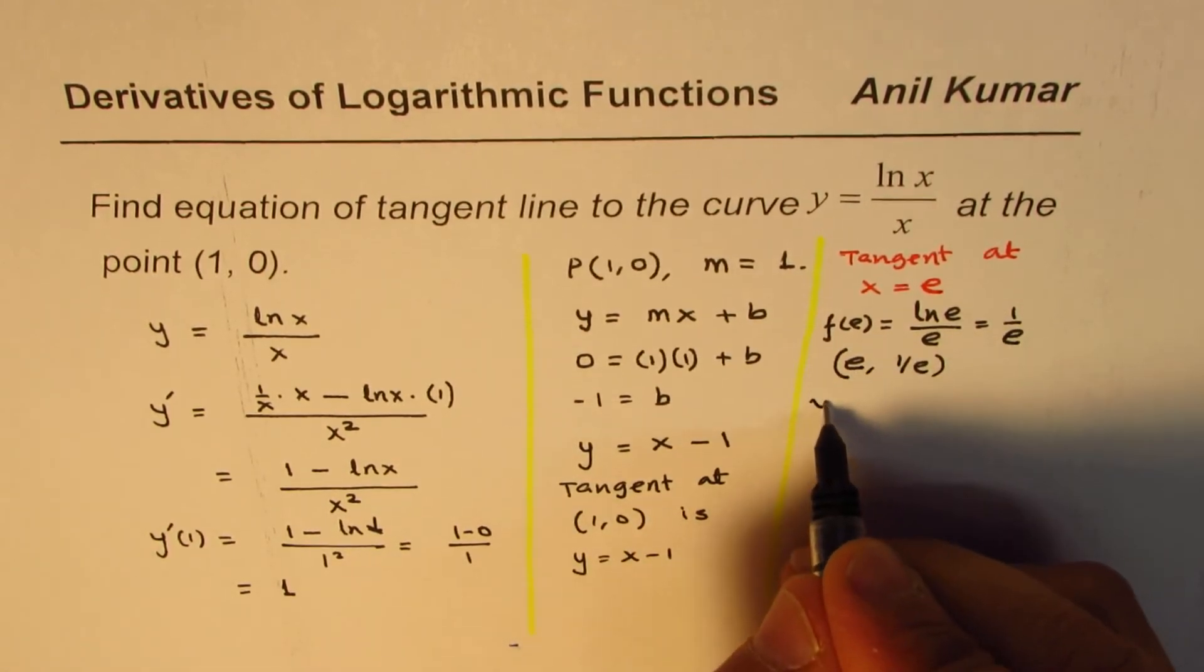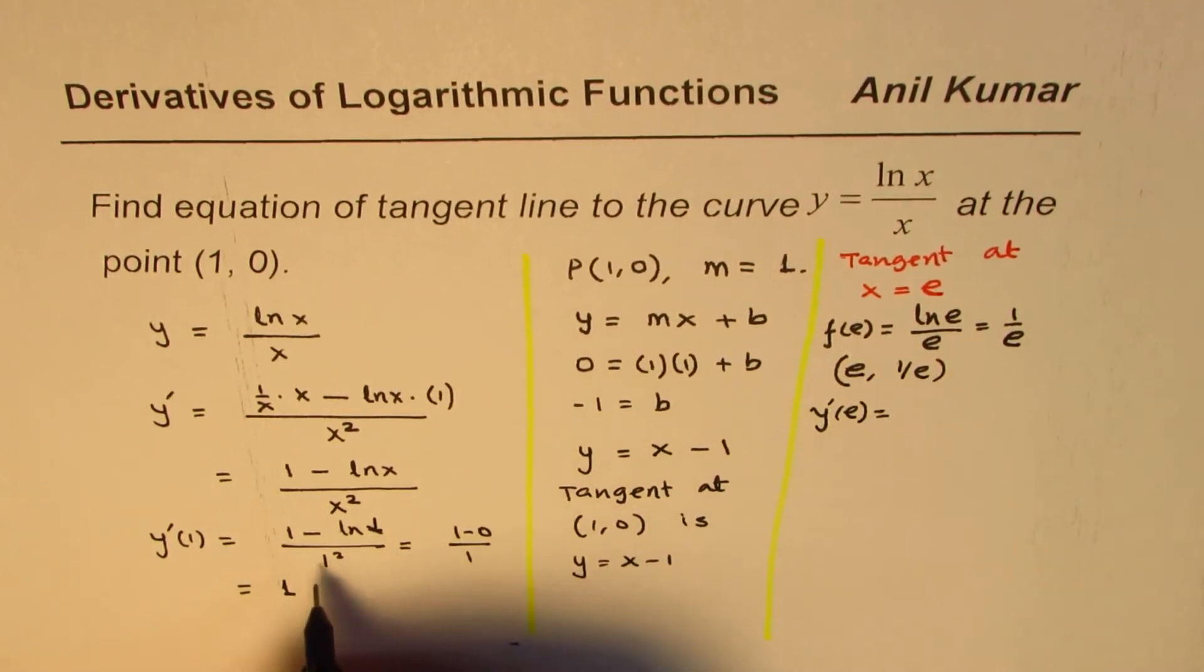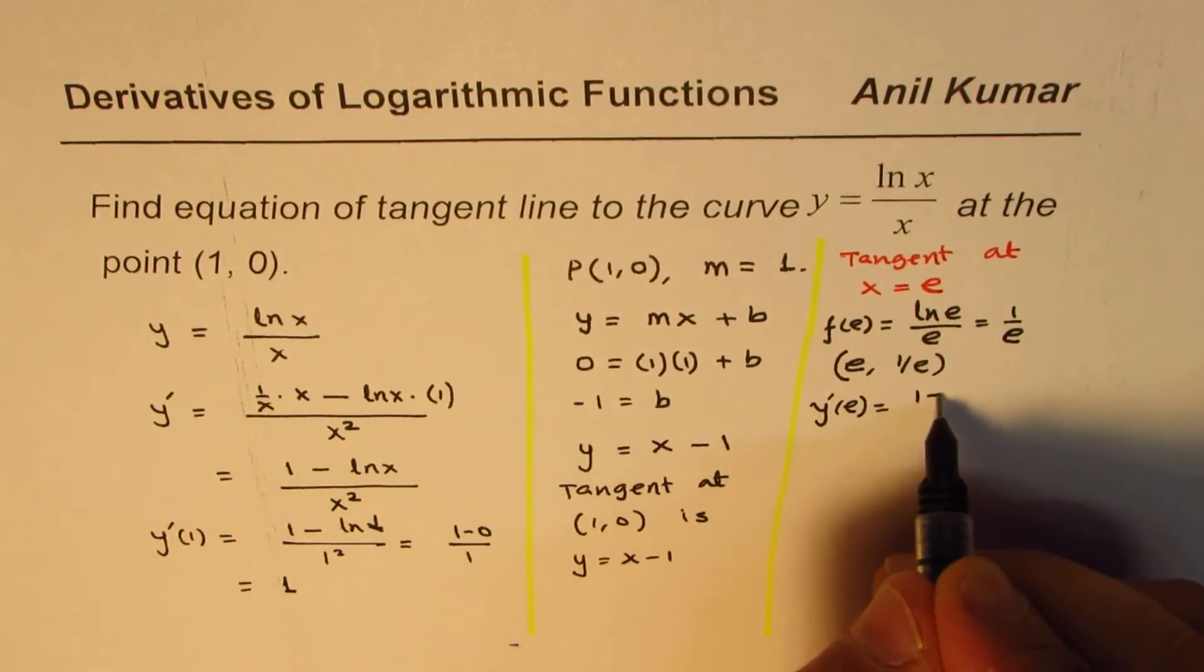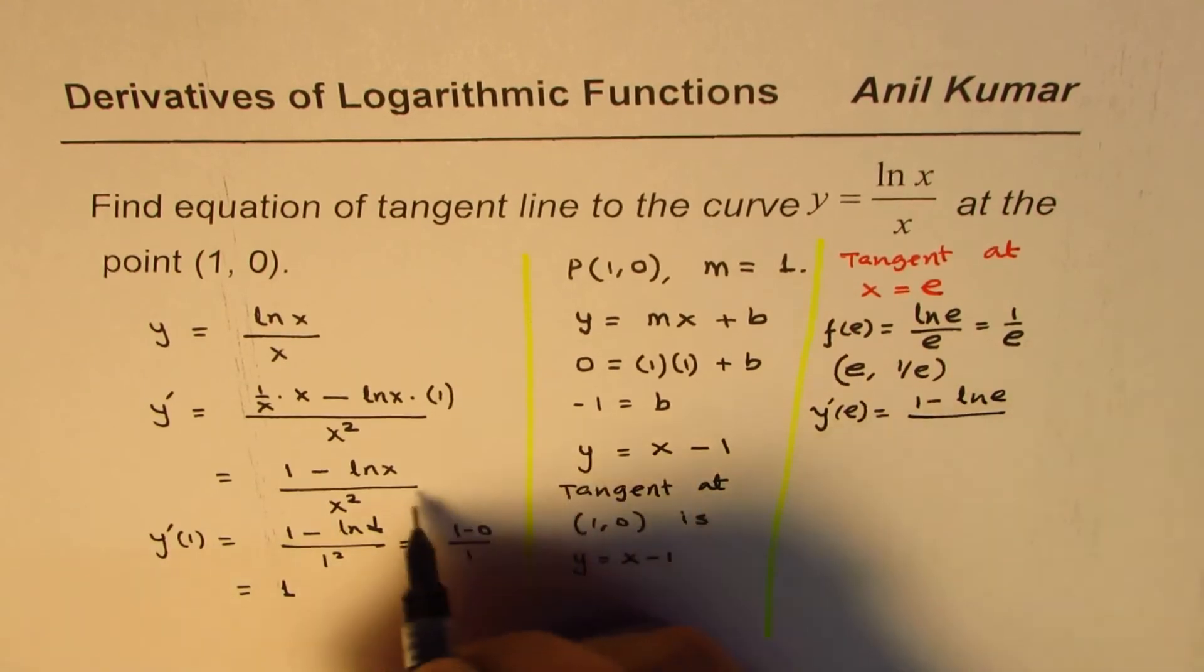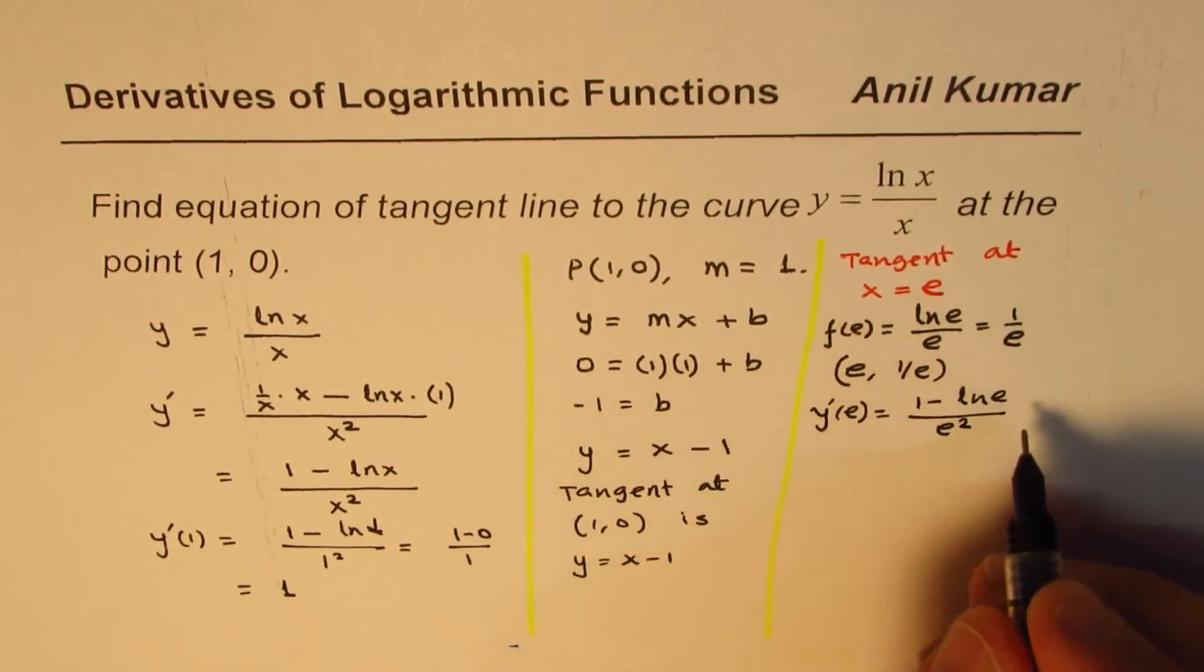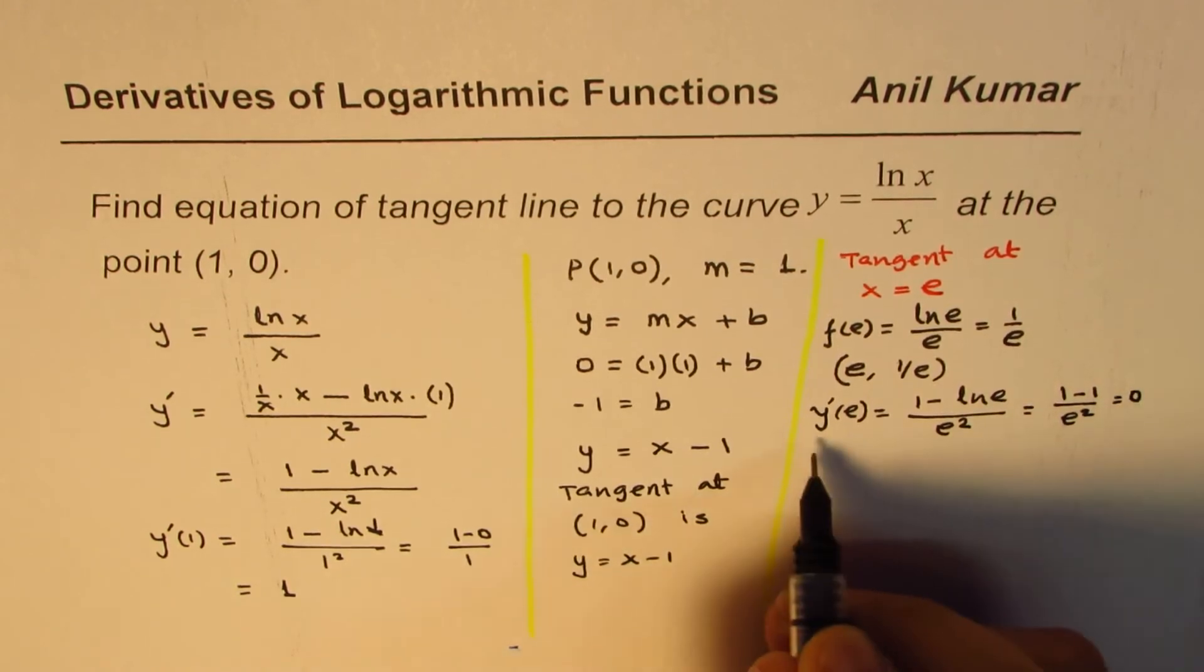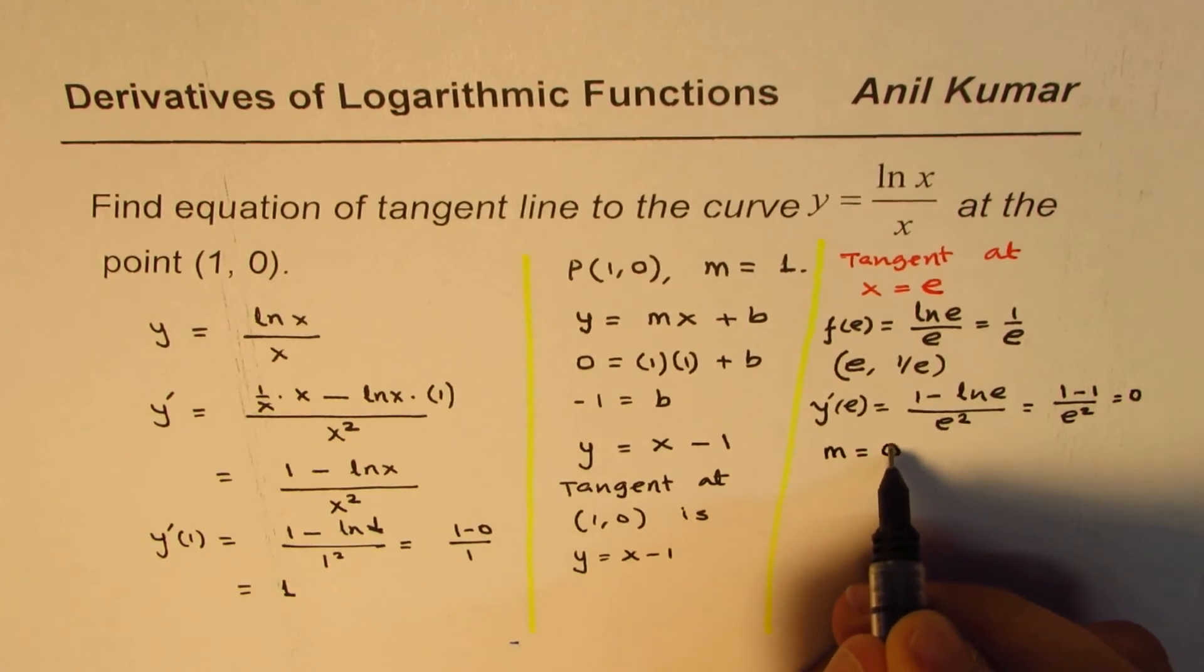What is the slope at e? y prime at e will be equal to, when we substitute in this formula, which is 1 minus ln e divided by e squared, right? We are substituting x as equals to e. So that gives us ln e is 1, so that gives us 1 minus 1 over e squared, which is 0. So the slope m, that means slope m equals to 0.